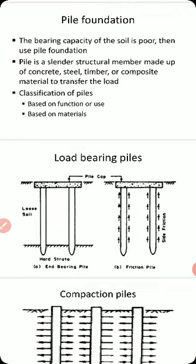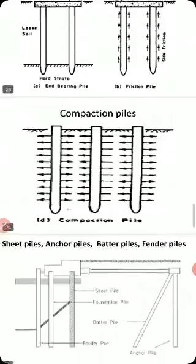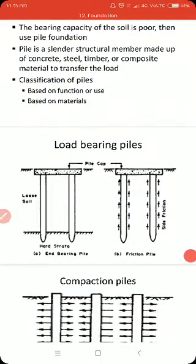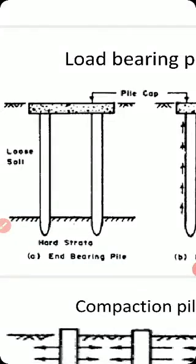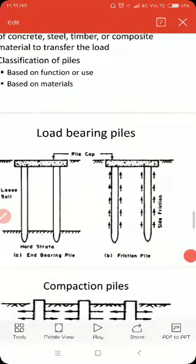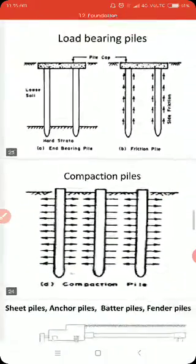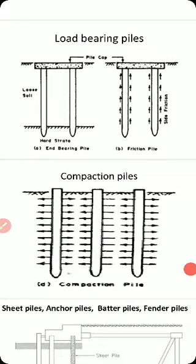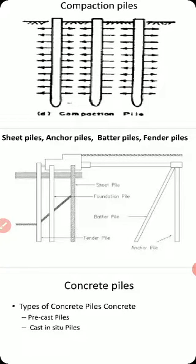Piles may be classified on the basis of function and material. Based on function, piles may be classified as load-bearing pile and compaction pile. Load-bearing piles are further classified as end-bearing pile and friction pile. End-bearing pile means the load is transmitted through the end to the ground. For friction pile, the load is balanced by the friction along the pile surface. Compaction pile is used to compact the soil or increase the capacity of loose soil by inserting piles into it. Other types include sheet pile, anchor pile, batter pile, and fender pile, which are used as supporting structures.